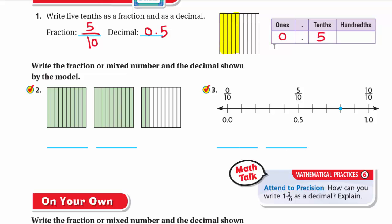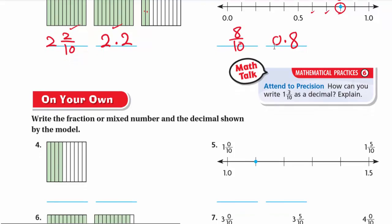Write the fraction or mixed number and the decimal shown by the model. Here we have one whole and another whole — that's 2 — and 1, 2 parts out of 10, so we have 2 and 2 tenths, or as a decimal 2.2. For number 3, on the number line we count: 0 tenths, 1, 2, 3, 4, 5, 6, 7, 8 tenths — so as a fraction it's 8/10 and as a decimal it's 0.8.